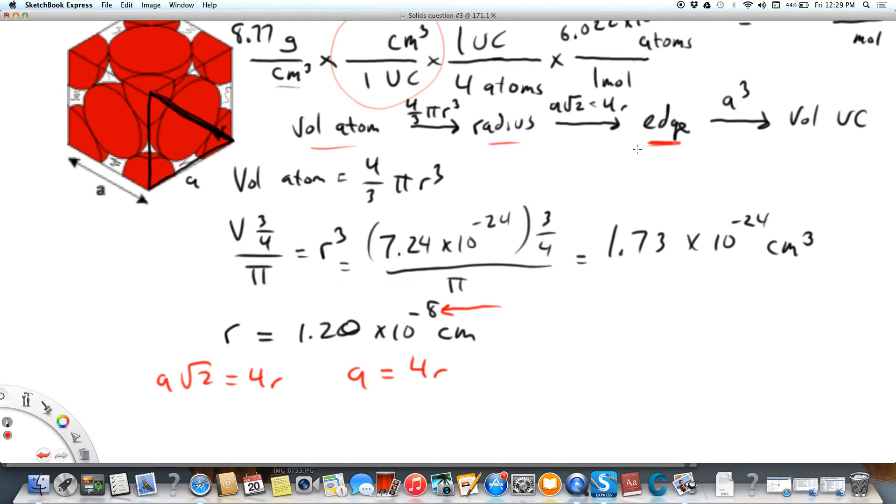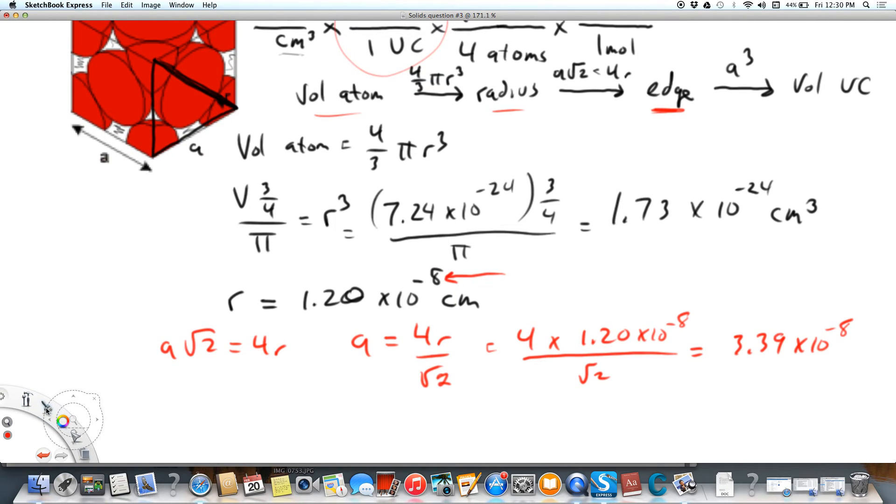A equals 4R over the square root of 2. And so, my edge equals 3.39 times 10 to the minus 8.